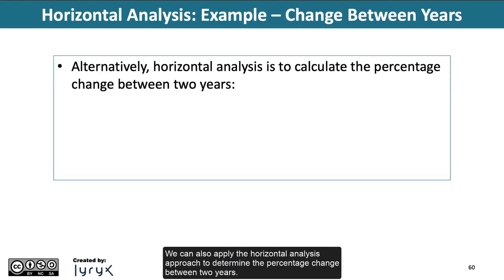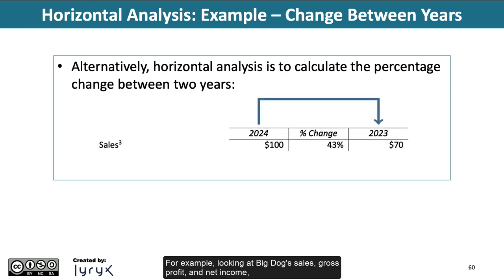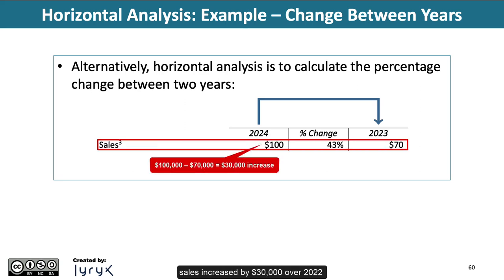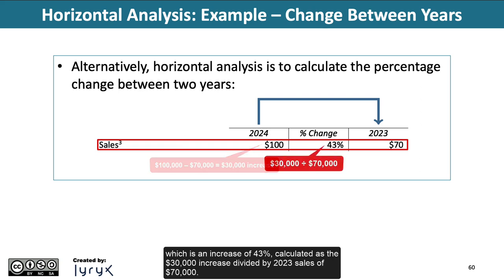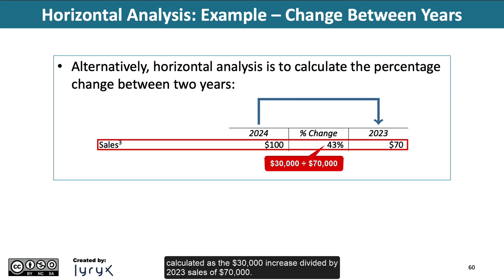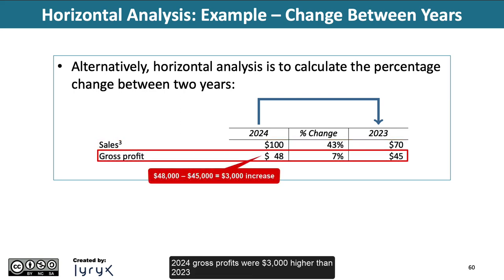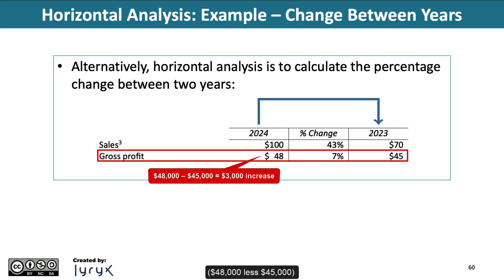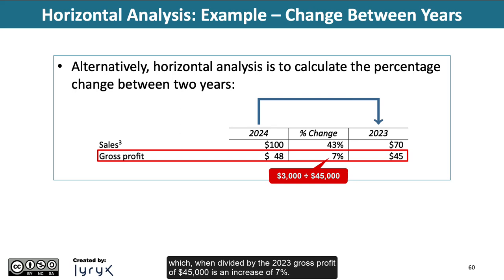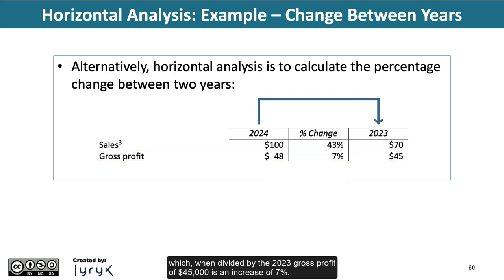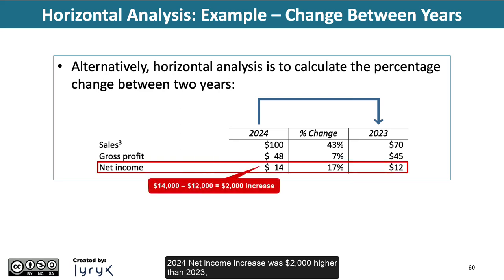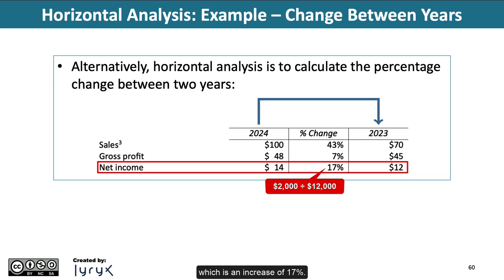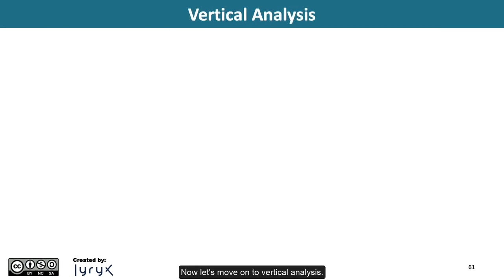We can also apply the horizontal analysis approach to determine the percentage change between two years. For example, looking at Big Dog sales, gross profit, and net income: sales increased by $30,000 over 2023 — $100,000 in 2024 sales less $70,000 in 2023 sales — which is an increase of 43%, calculated as the $30,000 increase divided by 2023 sales of $70,000. 2024 gross profits were $3,000 higher than 2023 ($48,000 less $45,000), which when divided by the 2023 gross profit of $45,000 is an increase of 7%. 2024 net income was $2,000 higher than 2023, which is an increase of 17%.